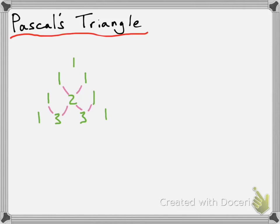Continuing in the same fashion to build Pascal's triangle: in the next row we're going to have one as our first term. The next term is the sum of the two above it, so one plus three is four. The next term is three plus three, which is six. The next term is three plus one, which is four. And then the last term is just going to be the number one again.